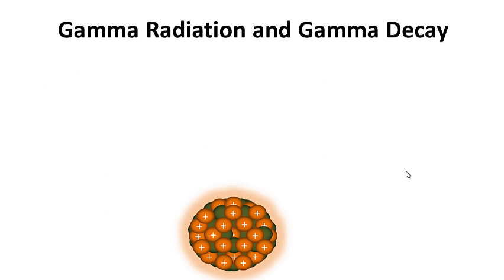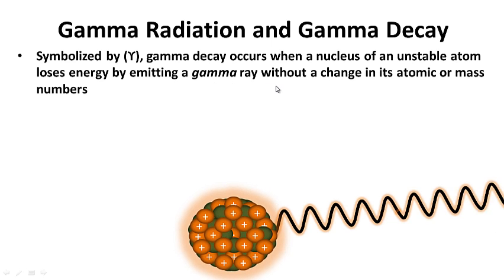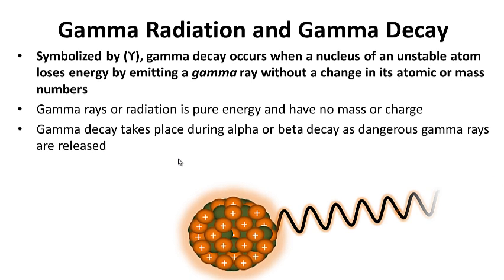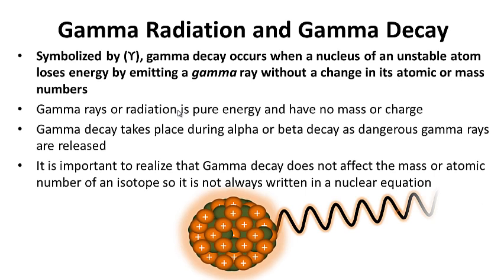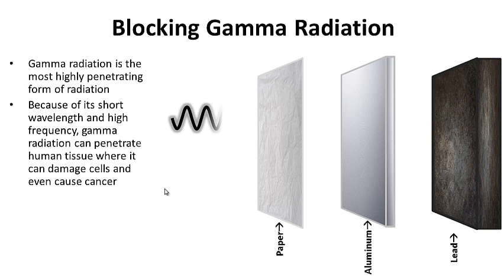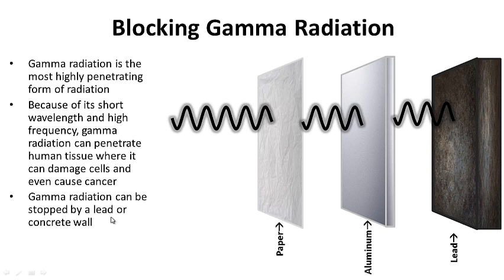The last topic is gamma radiation and gamma decay, symbolized by the Greek letter gamma. Gamma decay occurs when a nucleus of an unstable atom loses energy by emitting a gamma ray without changing its atomic mass or atomic number. There's no change in mass because gamma rays have no mass. Gamma rays are pure energy and have no mass or charge. Gamma decay takes place during alpha or beta decay as dangerous gamma rays are released. It does not affect the mass or atomic number of an isotope, so it is not always written in a nuclear equation. Because of its short wavelength and high frequency, gamma radiation can penetrate human tissue where it can damage cells and even cause cancer. It easily goes through paper and aluminum, but can be stopped by a lead or concrete wall.